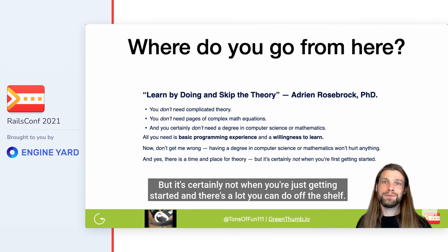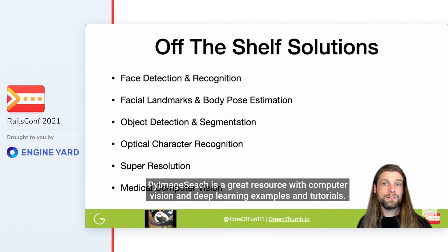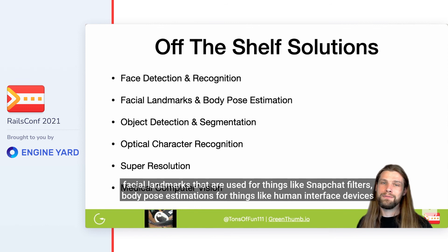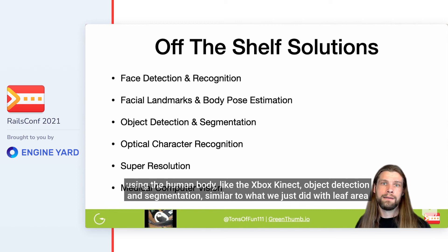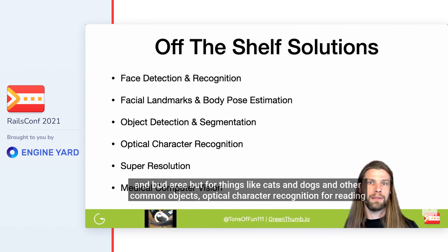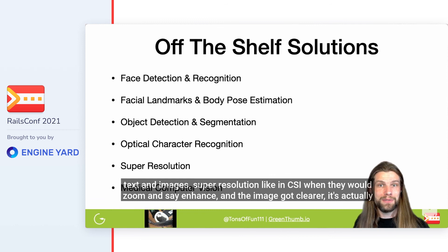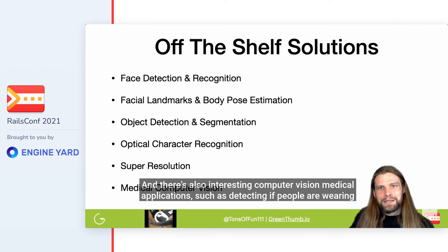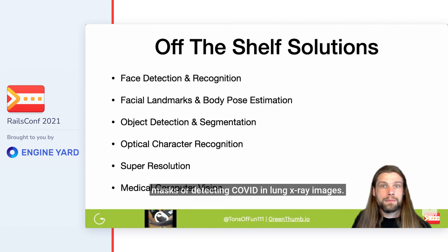There's a lot you can do off the shelf. PyImageSearch is a great resource with computer vision and deep learning examples and tutorials. There are many off-the-shelf solutions including face detection and recognition, facial landmarks used for things like Snapchat filters, body pose estimations for things like the Xbox Kinect, object detection and segmentation similar to what we just did with leaf area and bud area, optical character recognition for reading text in images, super resolution — like the 'zoom and enhance' from CSI — which is actually something you can do with a deep neural network these days, and interesting medical applications such as detecting if people are wearing masks or detecting COVID in lung X-ray images.